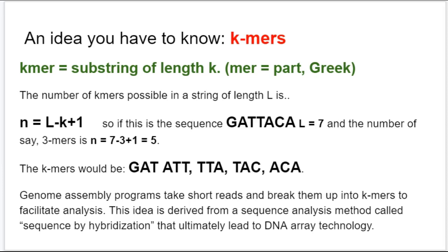Now I have to introduce you to an idea called K-mers. This is a really important concept in sequence analysis. A K-mer is a substring of length K. 'Mer' in Greek means a part. You've heard the word 'mer' before — for example, 'primer,' a short string of DNA or RNA used to start synthesis, or 'oligomer,' a short fragment of nucleotides of some unknown length. So K-mers are little short pieces of DNA.